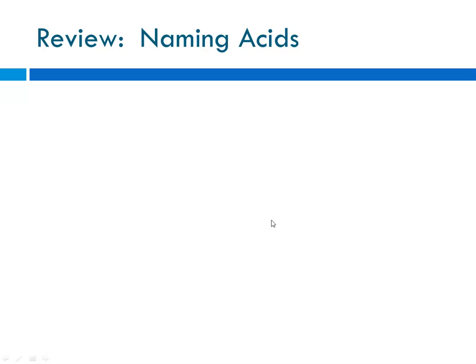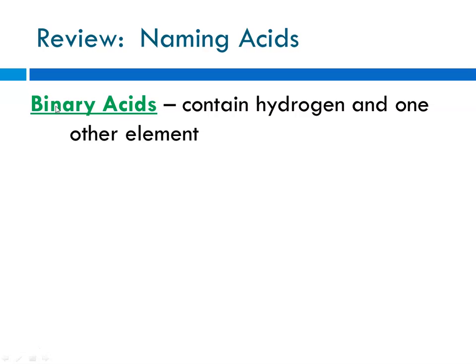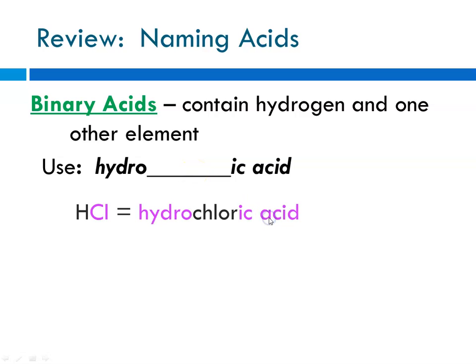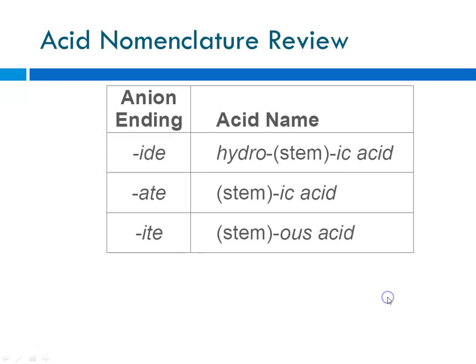Let's review how we go about naming acids. We learned a while ago that binary acids contain hydrogen and one other element. Remember, binary compounds only contain two elements. So, in the case of binary acids, they contain hydrogen and one other element. We use the naming convention hydro blank ic acid, where the blank part comes from the stem word for the anion.